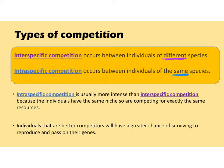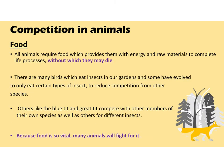Individuals that are better competitors will have a greater chance of surviving to reproduce and pass on their genes. All animals require food which provides them with the energy and raw materials they need to complete life processes — without food animals will die. There are many birds which eat insects in our gardens and some have evolved to only eat certain types of insects to reduce competition. Others like the blue tit and the great tit compete with other members of their own species as well as others for different insects, and because food is so vital many animals will compete for it.